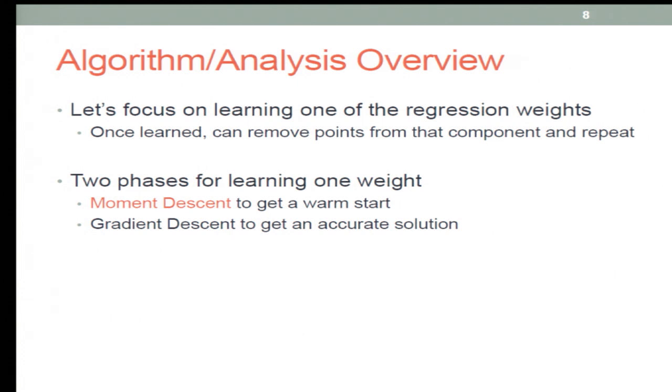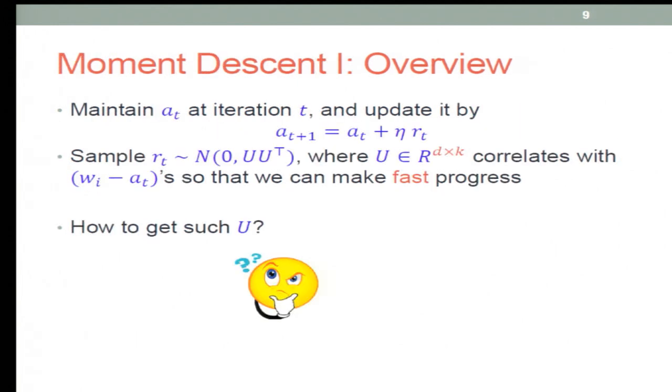For the second part, gradient descent actually converges exponentially fast. We don't have time to discuss this, but if you are very close to the optimal and you run gradient descent, you can prove some local correlation bound for your gradient. For the first part, this is the main technical contribution of this paper and it's also of independent interest.